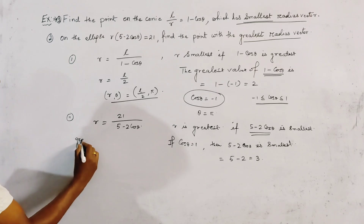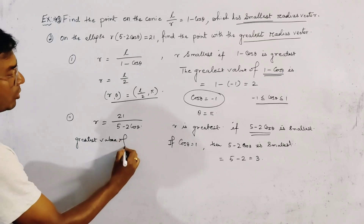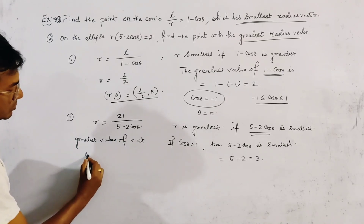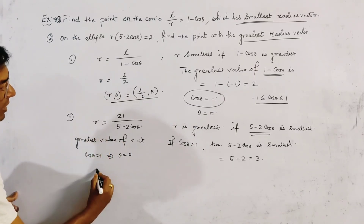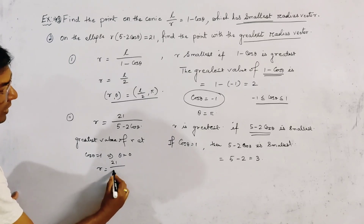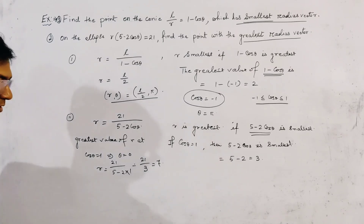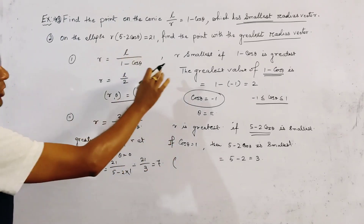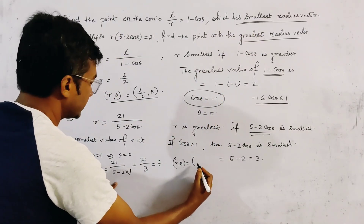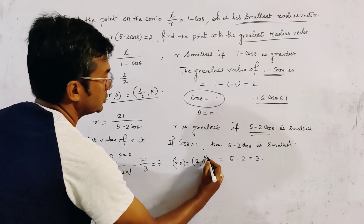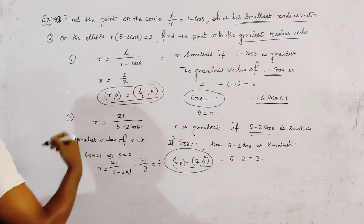The greatest value of R occurs at cosθ = 1, that is θ = 0. The greatest value of R is given by 21/(5 - 2×1) = 21/3 = 7. So the point on the ellipse where the greatest radius vector occurs is (R, θ) = (7, 0). This is the answer of the second problem.